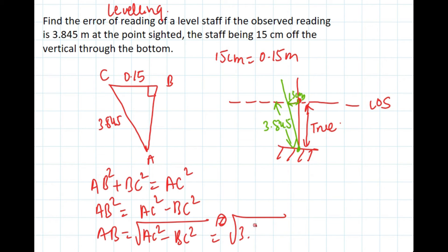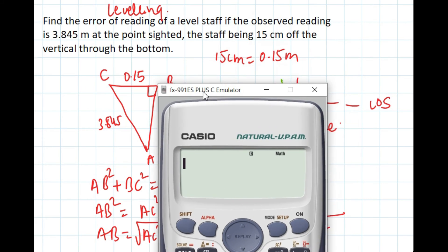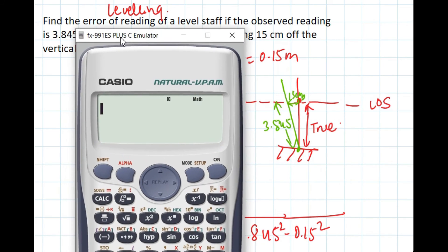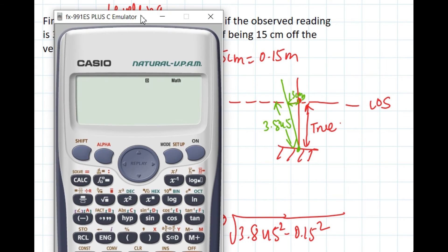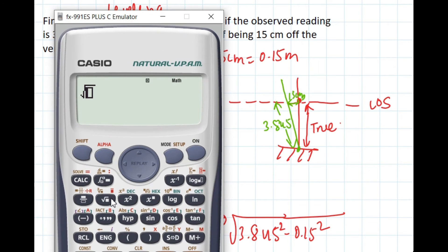So this comes out to be AC is 3.845² minus BC is 0.15². Let's calculate: √(3.845² - 0.15²). Our answer is 3.842 meters.